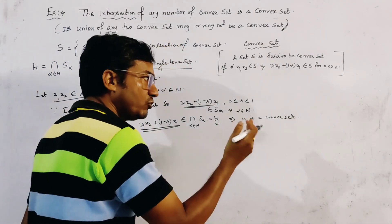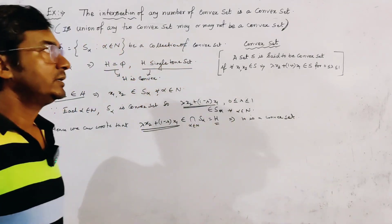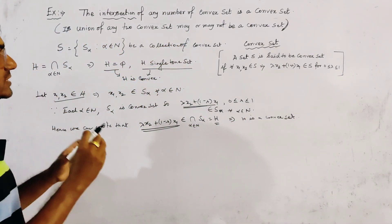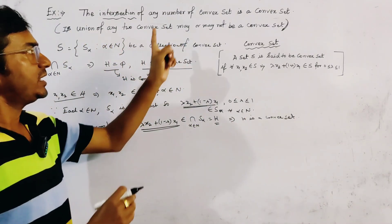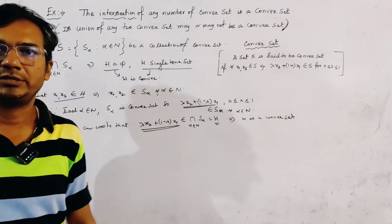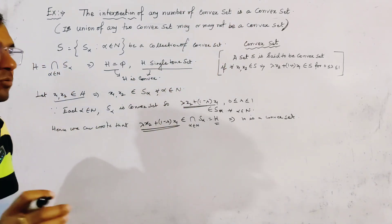So, we first stated that any two points X1 and X2 belong to H, and we showed that lambda*X2 + (1 - lambda)*X1, the convex combination, also belongs to H — implying H is a convex set. So we have proved that the intersection of any number of convex sets is a convex set.